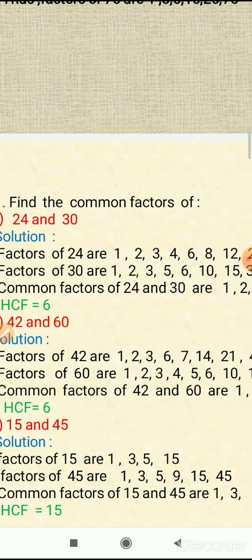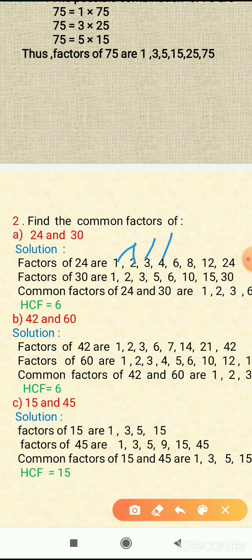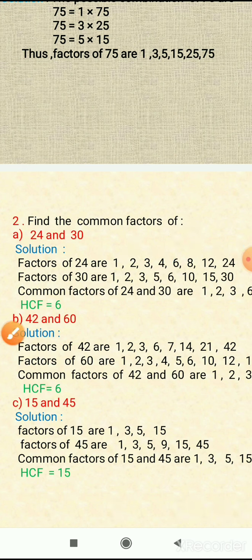Here we have to find the common factors of 24 and 30. So first we will find the factors of 24, as we have seen in example one. 24 is divisible by 1, 2, 3, 4, 6, 8, 12, and 24. So the factors of 24 are: 1, 2, 3, 4, 6, 8, 12, and 24.